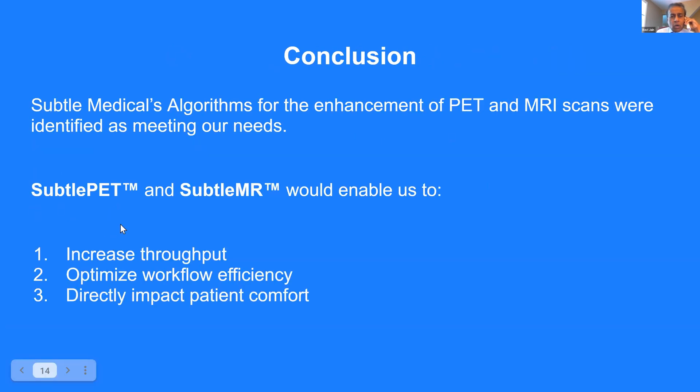When Subtle MR came out as a product, initially our FDA clearance was limited to brain, spine, and knee scans, and that's what we deployed at Middlesex. But as of Q2 or Q3 last year, we got FDA clearance to expand the anatomies way beyond brain, spine, and knee. Now we can do abdomen, pelvis, all MSK joints, and much wider anatomy coverage. As Dr. Jain suggested, they need to do a quick internal QC before they can expand usage.